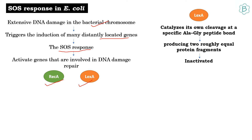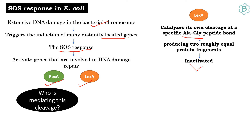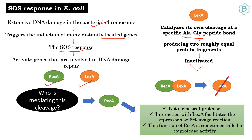LexA catalyzes its own cleavage at a specific alanine-glycine peptide bond — it is a repressor protein — producing two roughly equal protein fragments and gets inactivated. RecA protein, which is not a classical protease, interacts with LexA and facilitates LexA's self-cleavage reaction. This function of RecA is sometimes called co-protease activity.